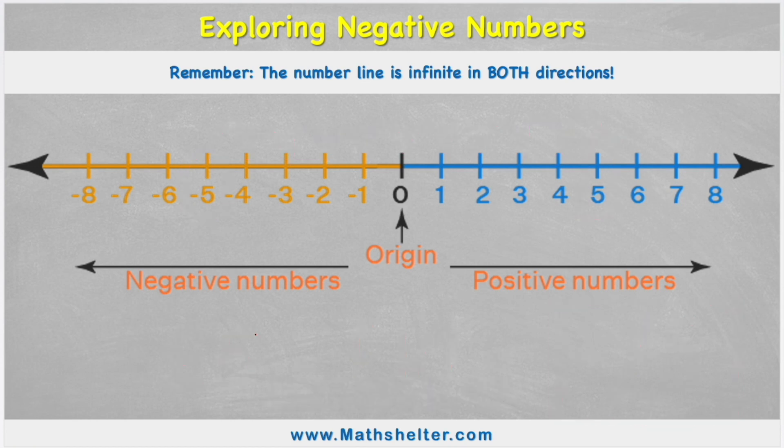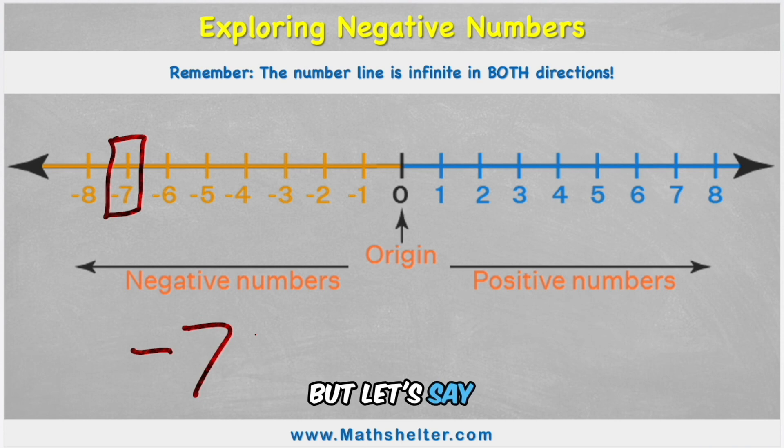Let's look at another example. Let's imagine I have negative seven. I've already got a debt. I owe something. So I have minus seven. But let's say someone gives me, so I add 10 pounds.